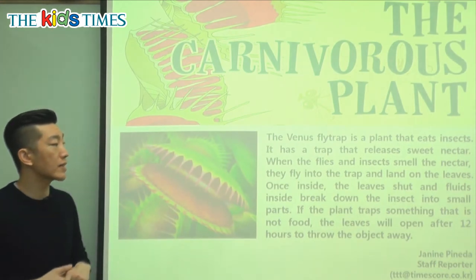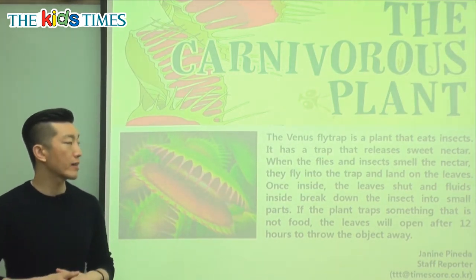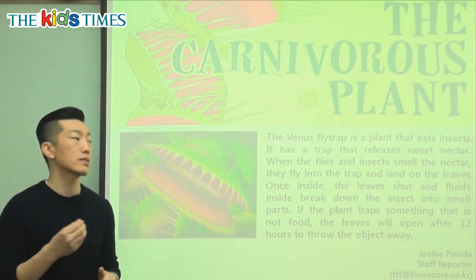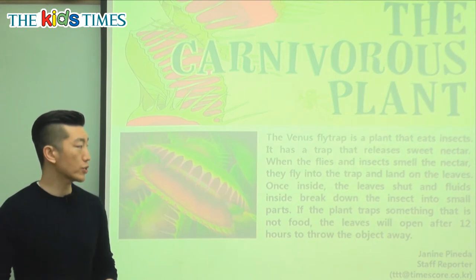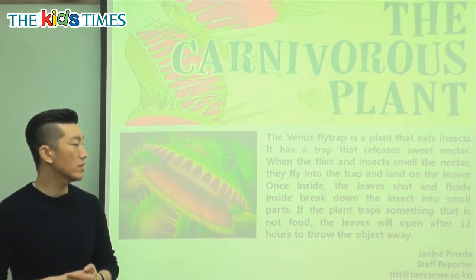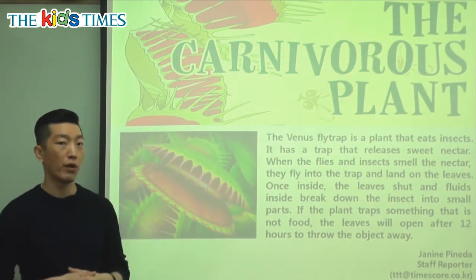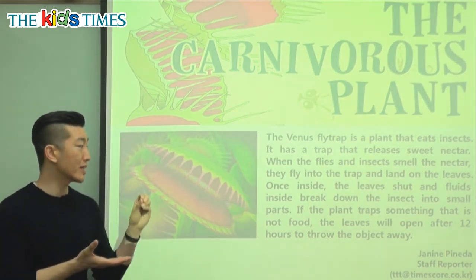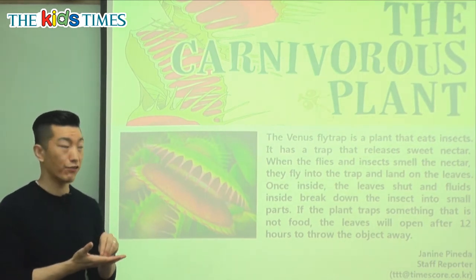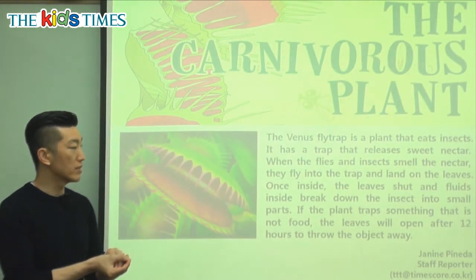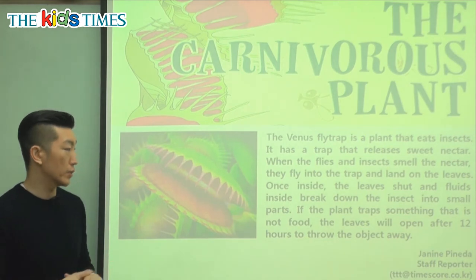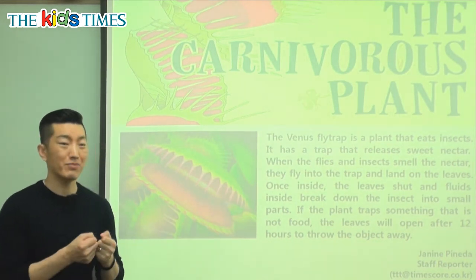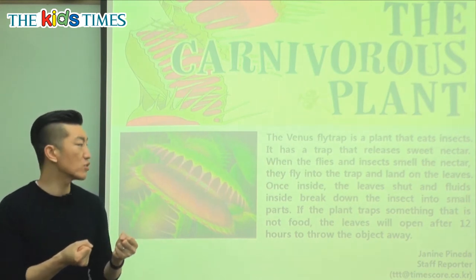When the flies and insects smell the nectar, they fly into the trap and land on the leaves. The sweet liquid inside the plant gives off a smell, and insects can smell it and come near the Venus flytrap. Once inside, the leaves shut and fluids inside break down the insect into small parts. Fluids are like liquid, and it starts spreading inside the trap, causing the insects to melt or break into small pieces.